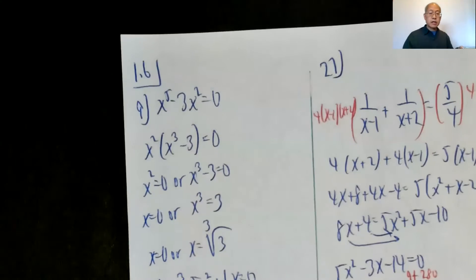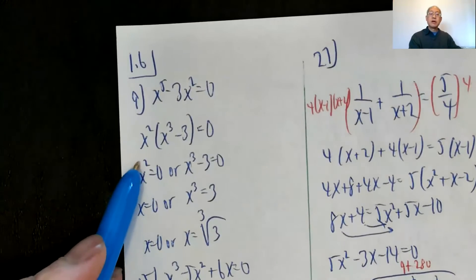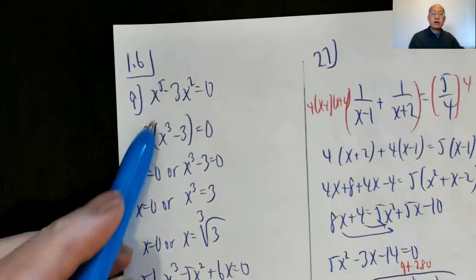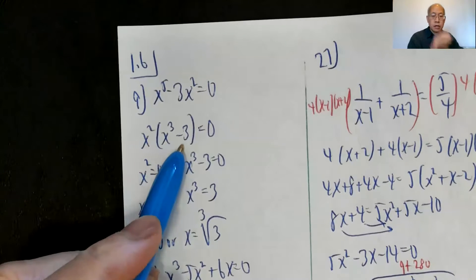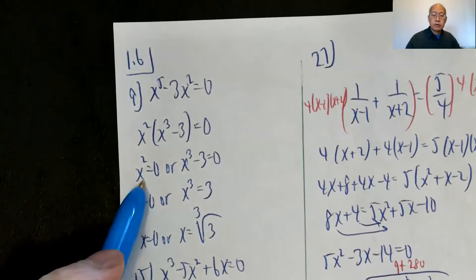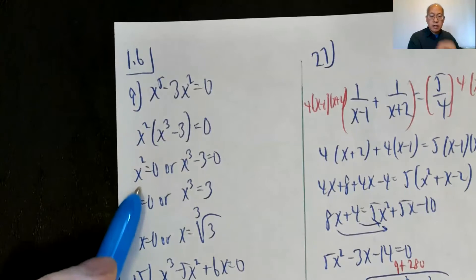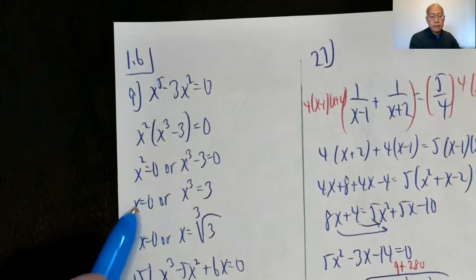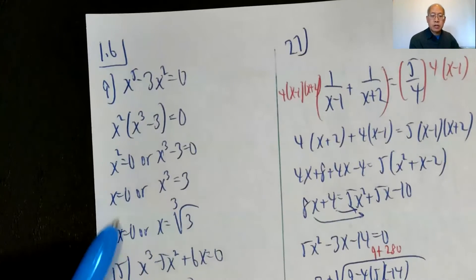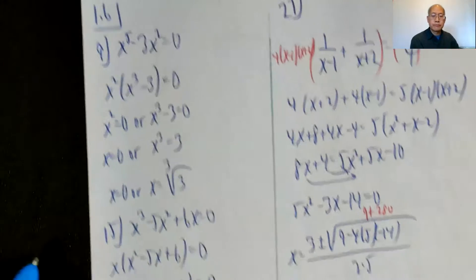Problem nine: x to the fifth minus three x squared equals zero. Factor out the x squared and you have x squared times x cubed minus three equals zero. That means x squared equals zero, or x cubed minus three is zero. If x squared is zero, that means x is zero. Add three, x cubed is three, take the cube root, so x is zero or x is the cube root of three.